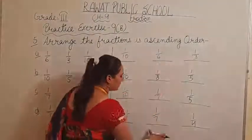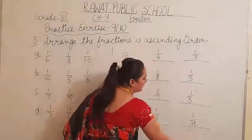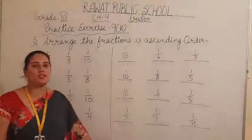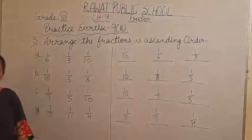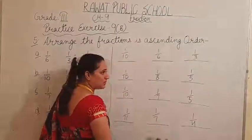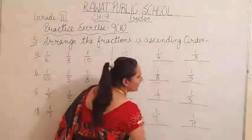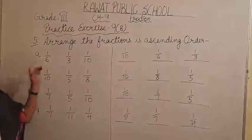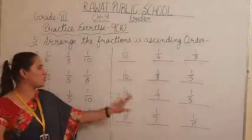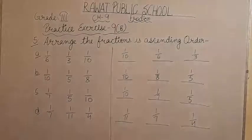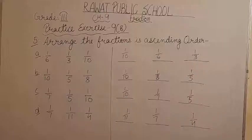This is called the ascending order of fractions — the first number is just smaller than the second, and just smaller than the third. We arrange all numbers in ascending order. If we go for descending order, we just reverse the sequence. But our question asks for ascending order, so we arrange all fractions in ascending order. I hope you all understand that, and you all have to complete your work on time. Thank you so much, students.